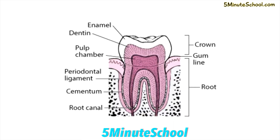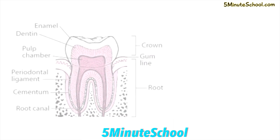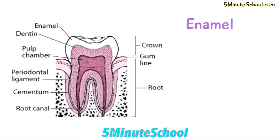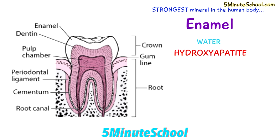The teeth are comprised of three layers: we have the pulp in the middle, the dentin layer, and the outer enamel layer. Enamel is said to be the strongest mineral in the body, and it consists of water and various minerals, the primary mineral being hydroxyapatite. Hydroxyapatite is a crystalline calcium phosphate.